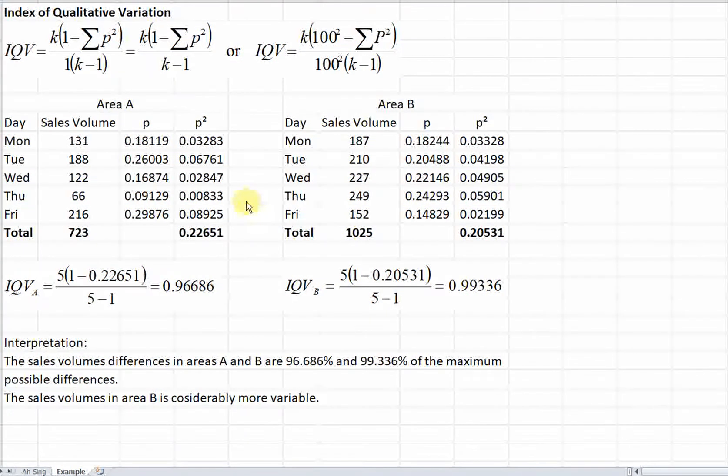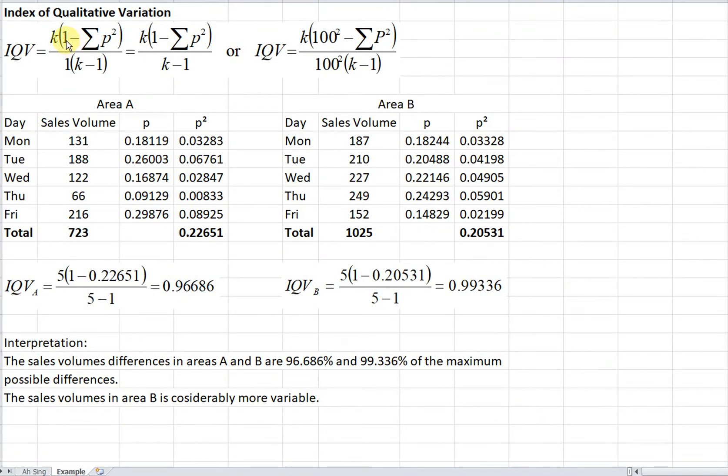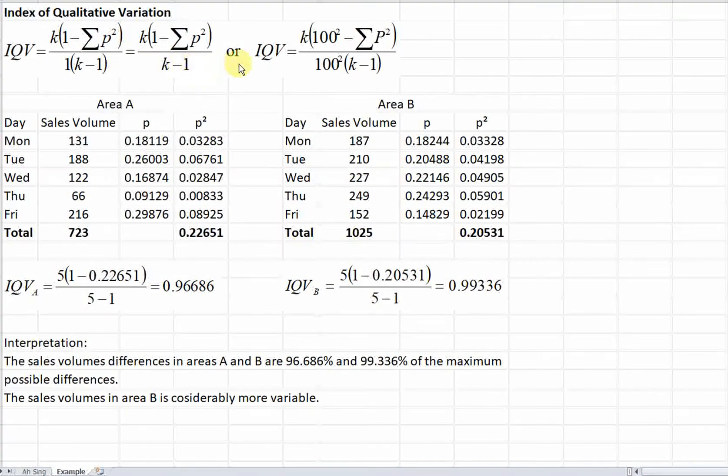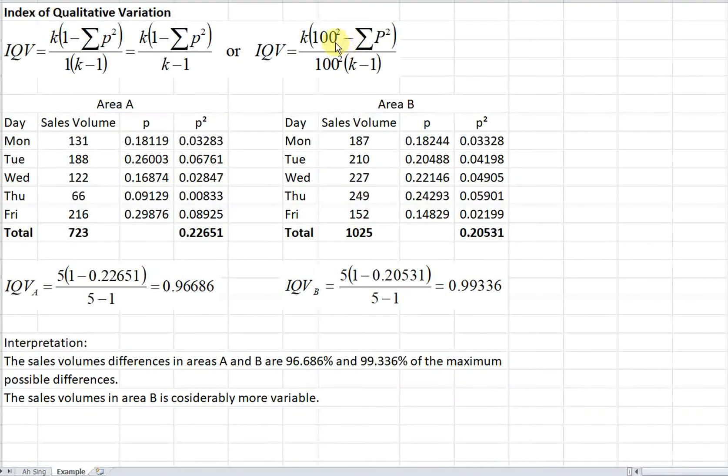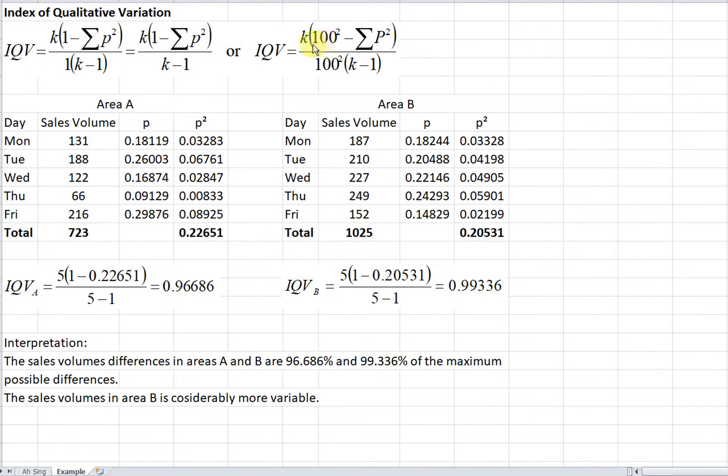If we are using proportion, then here should be using 1 because maximum or total probability should be equal to 1. So here will be 1 and here will be 1. One times anything, we will get back the same thing, so the 1 can be ignored. If we are using percentage, total percentage should be 100. And this part will change to percentage instead of 1.